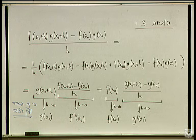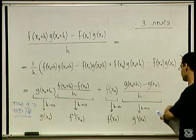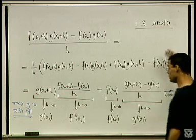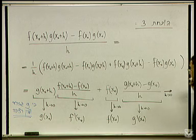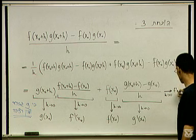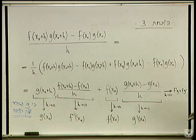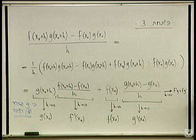ובסך הכל, כל הדבר הזה שאף ל: f'·g + f·g'. כלומר, (fg)'(x0) = f'(x0)·g(x0) + f(x0)·g'(x0). זה מה שרשום במשפט.